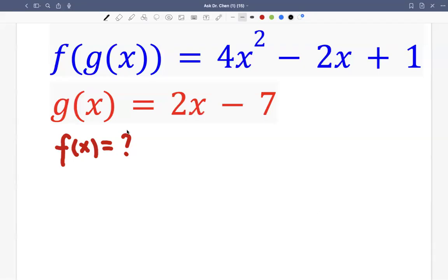Let's see this question. We're given the composition function, we're given the function g defined as a linear function, 2x minus 7.